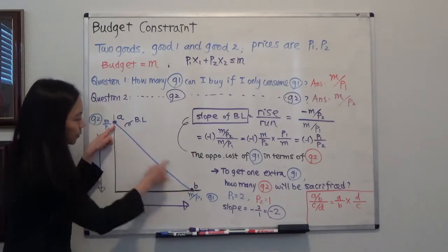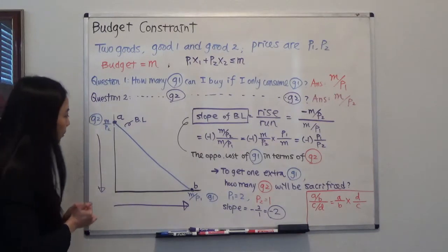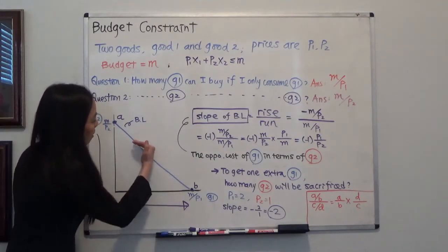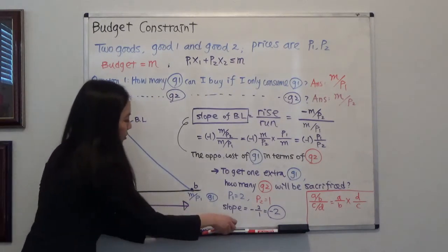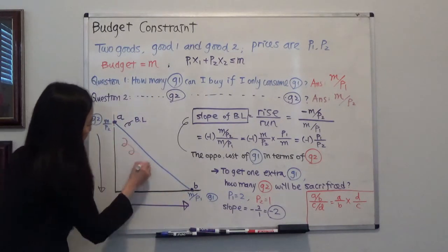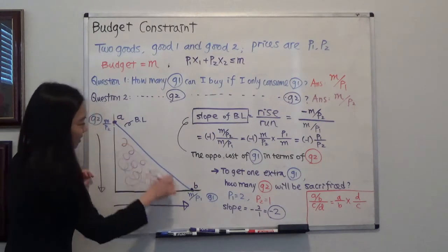Connect the two points, that will be my budget line. I can purchase any point on the budget line or inside the budget line. So that will be your budget set. You can see the budget set will be this pink area and our budget line is the slope line.